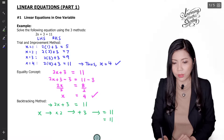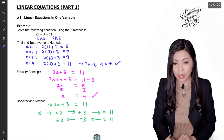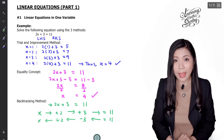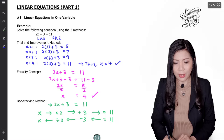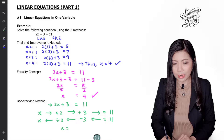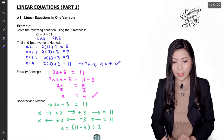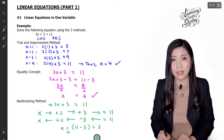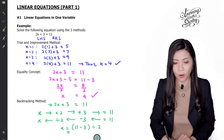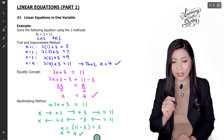Now we do backwards. Starting from 11, we minus 3 first, then divide by 2, and we will get x. So x equals to 11 minus 3, which is 8, then 8 divided by 2, which gives 4. So x equals to 4 — that is the final answer.